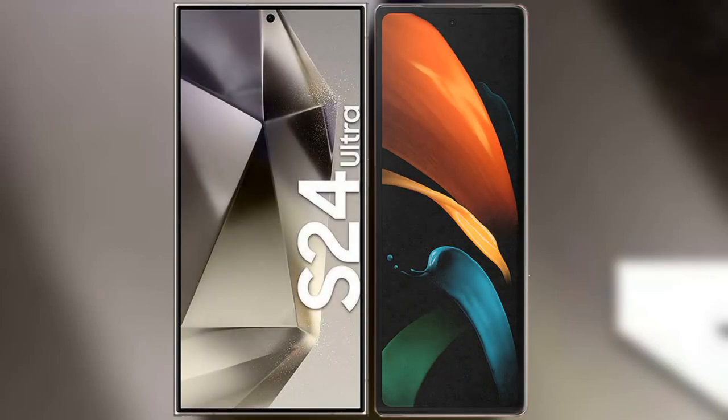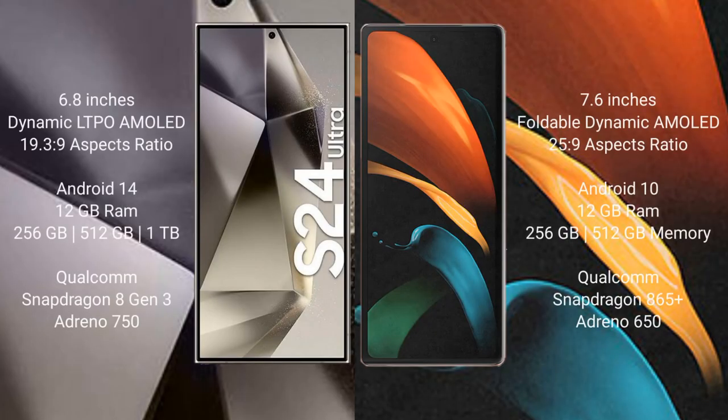I will compare the new Samsung Galaxy S24 Ultra with Samsung Galaxy Z Fold 2. The Samsung Galaxy S24 Ultra comes with a 6.8-inch Dynamic LTPO AMOLED display with an aspect ratio of 19.3:9. The Samsung Galaxy Z Fold 2 comes with a 7.6-inch foldable Dynamic AMOLED display with an aspect ratio of 25:9.